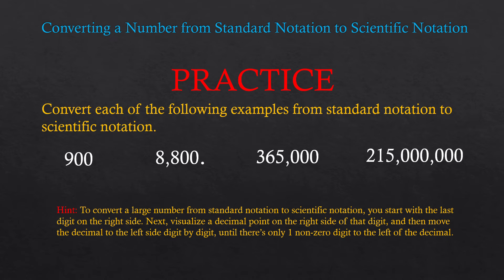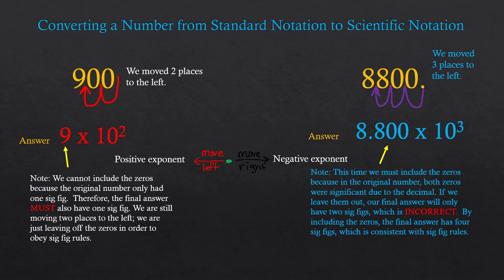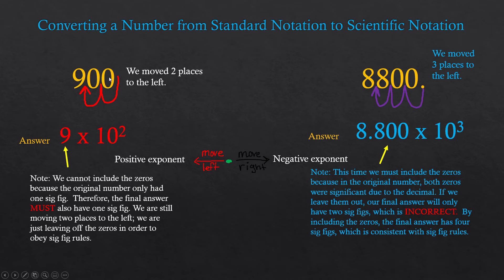Now let's work with the next example. Remember what we have to do: start with the last digit on the right side. For the number 900 that is the zero. We imagine there's a decimal to the right side of this digit, then move the decimal to the left digit by digit until there's only one non-zero digit to the left of the decimal. That gives us one and two moves — so the decimal goes right there.